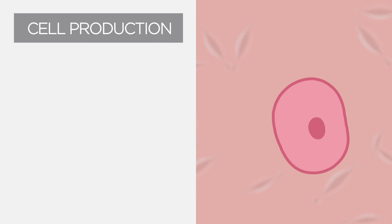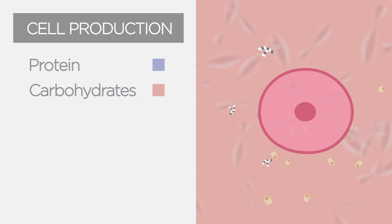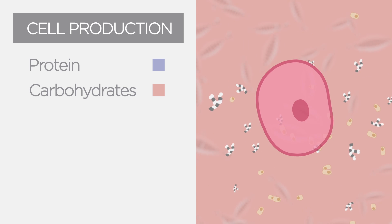Certain cells in the body have the ability to constantly produce proteins, carbohydrates and other chemical messages which together can rejuvenate skin and even reverse skin aging.